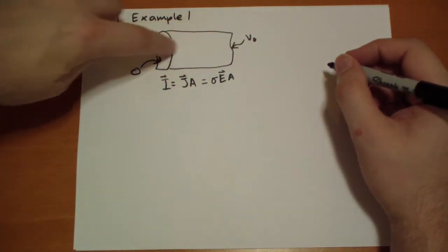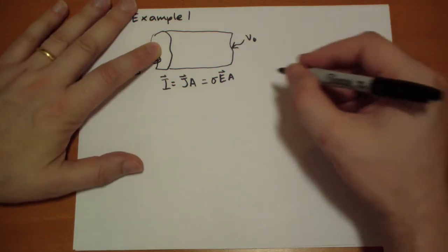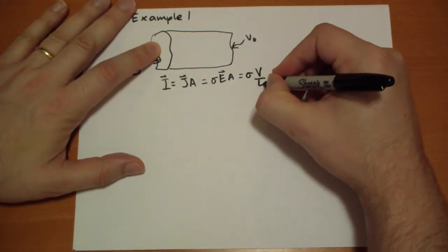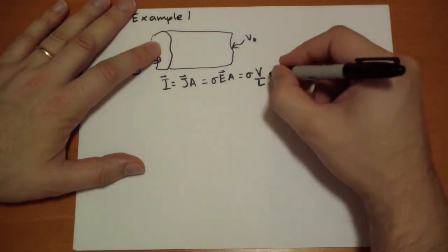And the electric field is just going to be the potential difference between the two plates divided by the length. So we get V over L times the area.